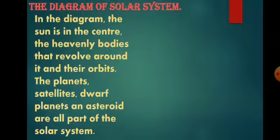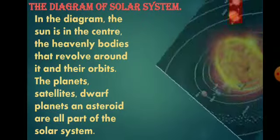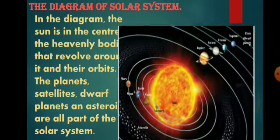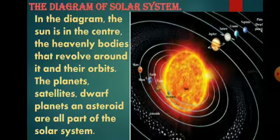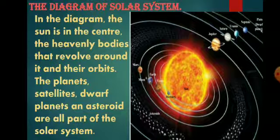Let's see the diagram of the solar system. In the diagram, as you can see here in this picture, the sun is in the center and the heavenly bodies that revolve around it in their orbits — the planets, meaning eight planets.